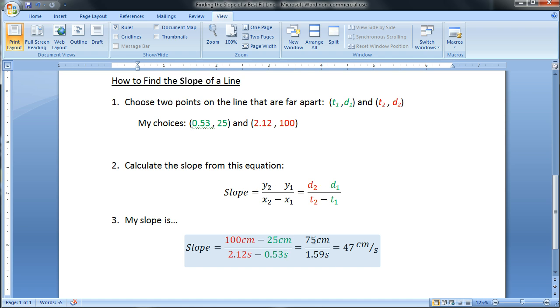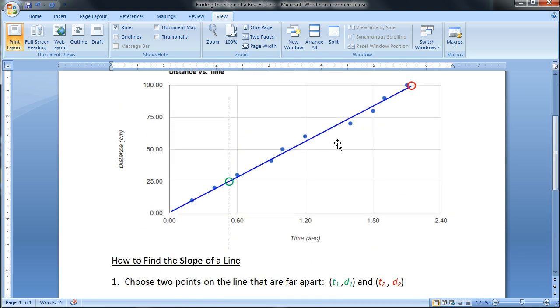I can do that math. 100 minus 25 is 75 centimeters. This difference here is 1.59 seconds. If you do the number part, 75 divided by 1.59, you get 47. That's our numerical value of our slope. But some units come along with that - centimeters and seconds. Centimeters on top, seconds on bottom: centimeters per second. That is the slope of my best fit line here.